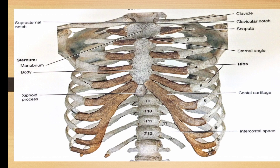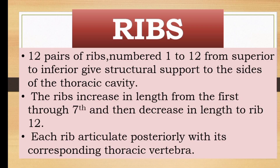This is T1 to T12. These are 12 pairs of ribs numbered 1 to 12 from superior to inferior, giving structural support to the sides of the thoracic cavity.